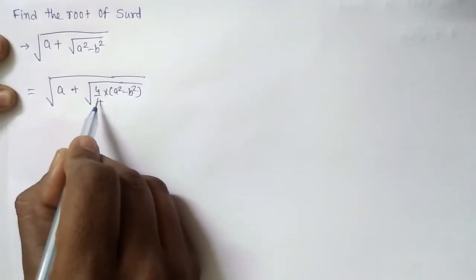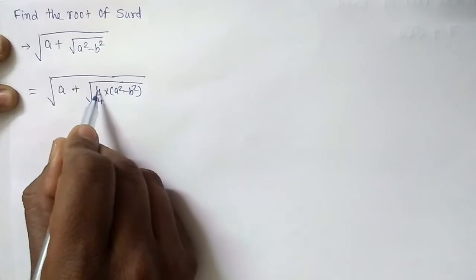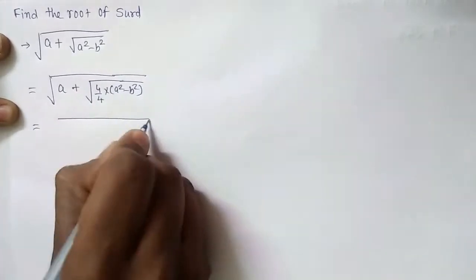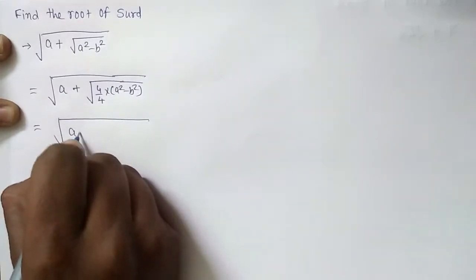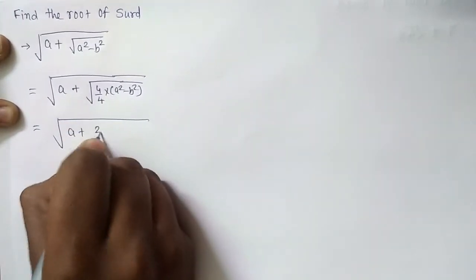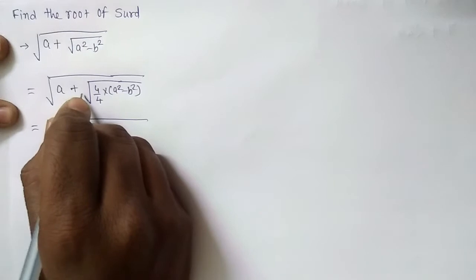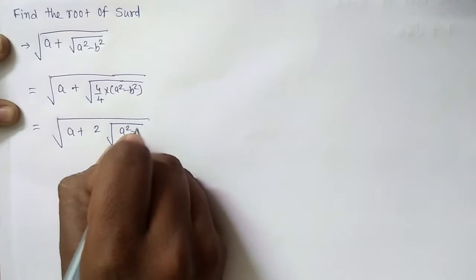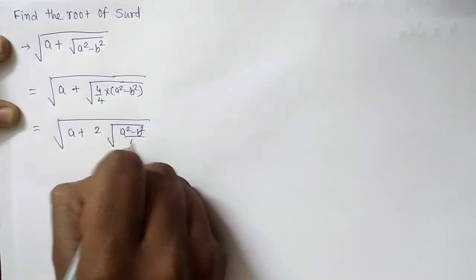But still, I should take two common from 4. If I'll take 4 out of under root, then it will be 2. Now, a plus I should write 4. If I'll take it out of under root, it is 2 into under root a square minus b square upon 4.